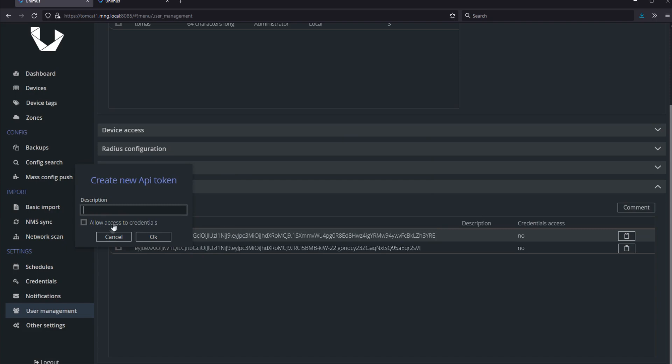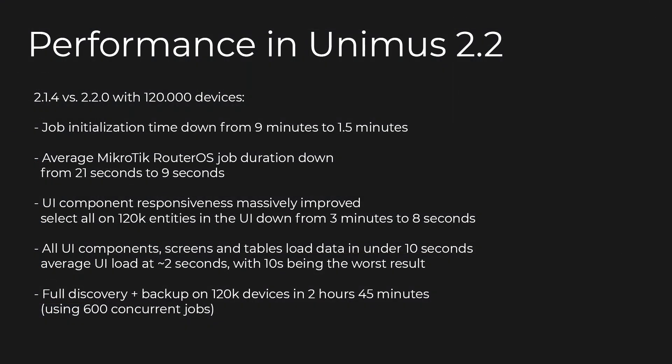As mentioned at the start of the video, performance was a heavy focus for this release. We've tested Unimus with 120,000 devices and it was able to complete all device jobs in 2 hours and 45 minutes. We've also worked across all of the subsystems and the GUI screens of Unimus to make sure responsiveness feels good and the system handles the 120k device load without issues. You should however see improvements no matter what your system size is — for example, even with 10,000 devices in the system, all parts of Unimus behave better and respond faster than before.